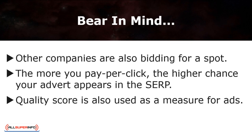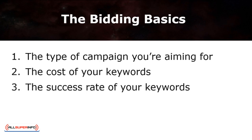The more you pay per click, the higher chance you have that your advert appears in the SERP. However, unlike real-life bidding, it's not just the highest bid price that's taken into account for the projection of your ad. Google also measures your ad by a quality score. There's no fixed rule for the bid amount that you should be paying. Different people will have different bidding prices, and at the end of the day, it's dependent on three important factors: the type of campaign you're aiming for, the cost of your keywords, and the success rate of your keywords.